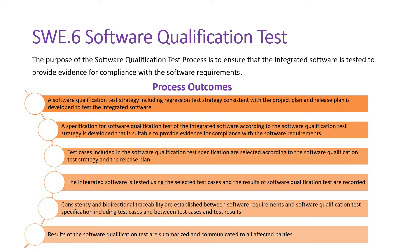The third outcome is that test cases from the software qualification test specification are selected according to the software qualification test strategy. Consistency and bi-directional traceability are established between the software requirements and the software qualification test specification, including test cases, and between test cases and test results. Results of the software qualification test are summarized and communicated to all affected parties.